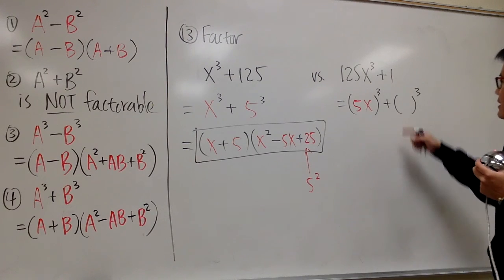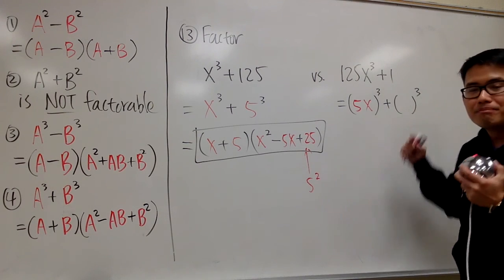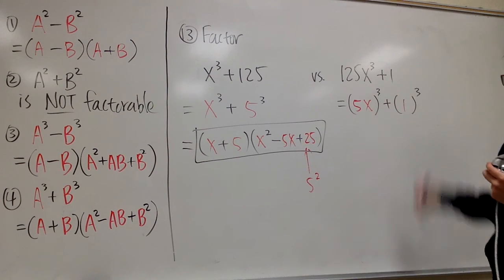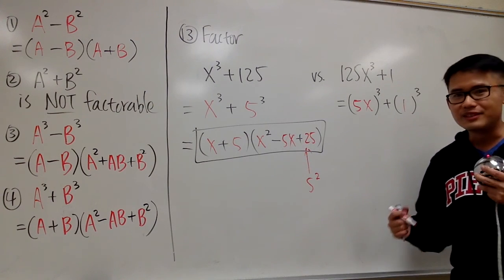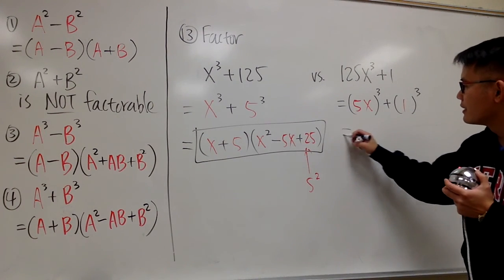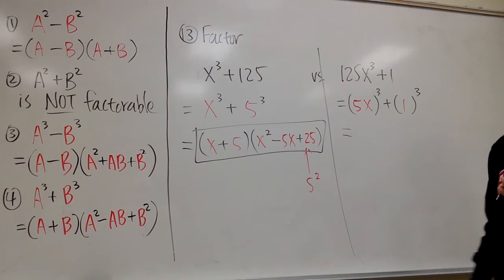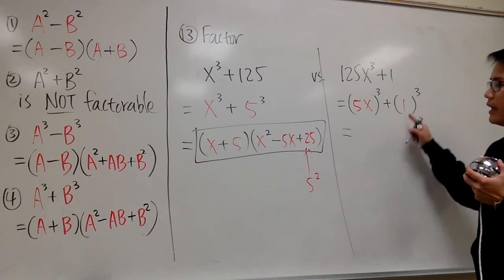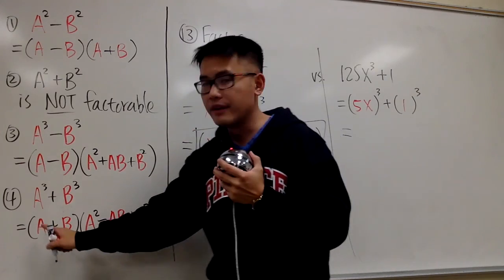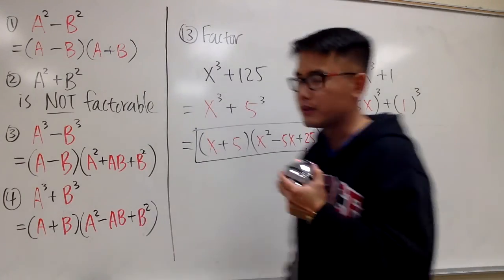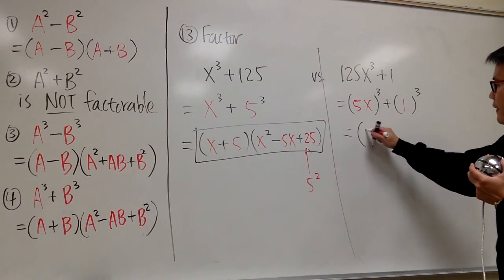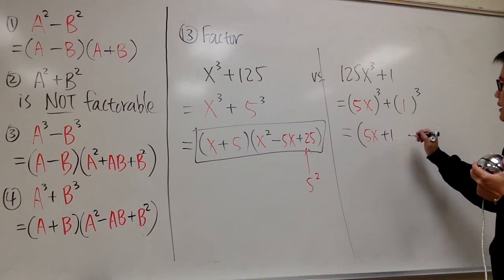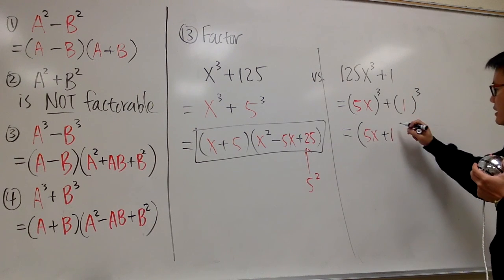For the 1, I can write 1 as 1 to the third power — it is still 1. So the a is 5x and the b is 1. The formula says we have the first parentheses as a plus b, giving us 5x plus 1.